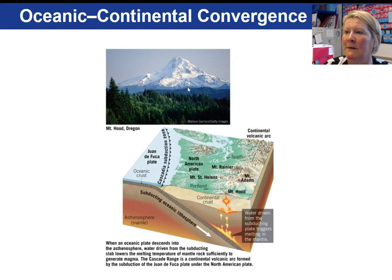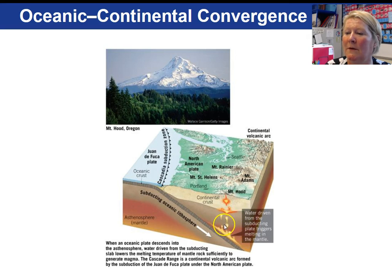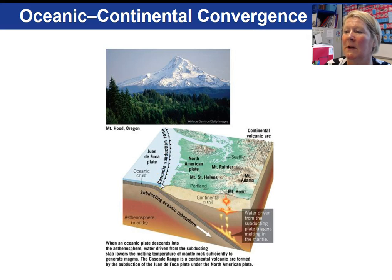Here's Mount Hood, part of the Cascade Range in Oregon. We're looking at our subducting oceanic lithosphere and flux melting: water driven from the subducting plate lowers the melting point of the mantle, causing it to melt. The more buoyant, less dense magma works its way up through the lithosphere and some may eventually reach the surface, creating a volcanic eruption. The whole range of mountains — the Cascade Range — is collectively called a continental volcanic arc. This is the Cascadia subduction zone, where the Juan de Fuca tectonic plate is subducting beneath the North American plate.